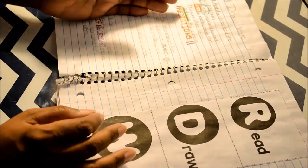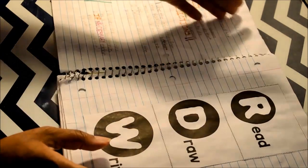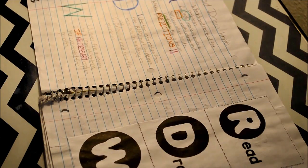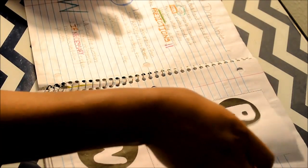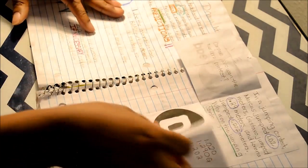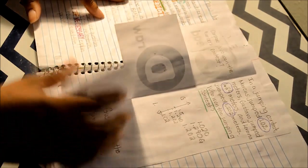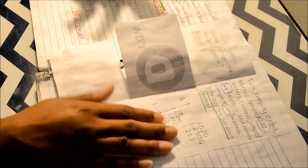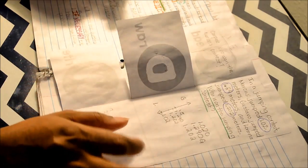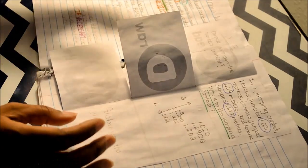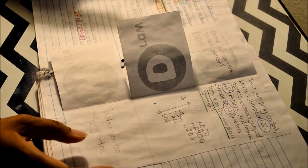After that, I model for the kids the red-yellow-green light process using the interactive notebook template. So, on the left side, here's where I write my things and the kids write them. On the right side, there's the red-yellow-green light foldable. And the foldable takes them through modeling of the process. It breaks the problem down into the sections that I need them to have.